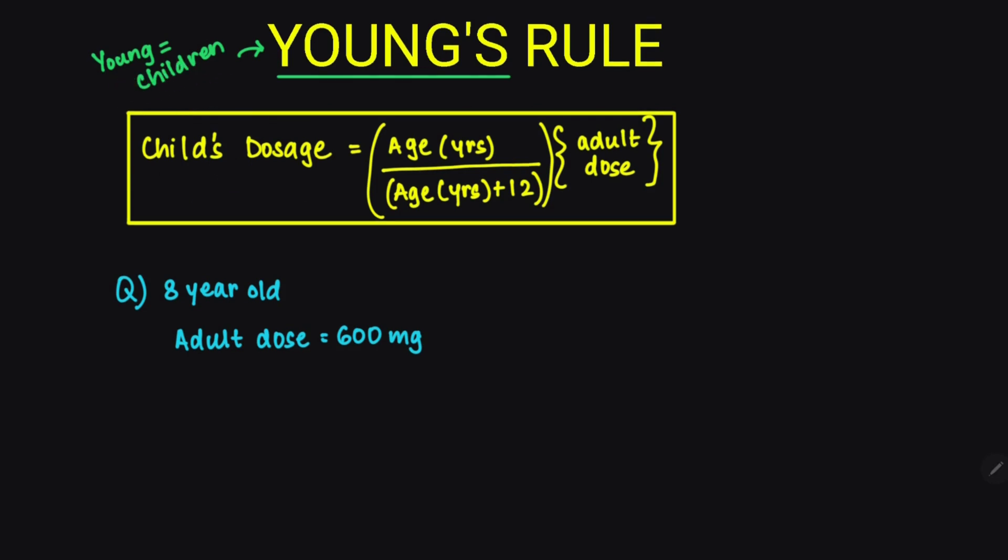Children are young, hence Young's rule is for the dosage of a child. The formula states that the child's dosage is equal to the age of the child in years upon the age of the child in years plus 12, into the adult dose.